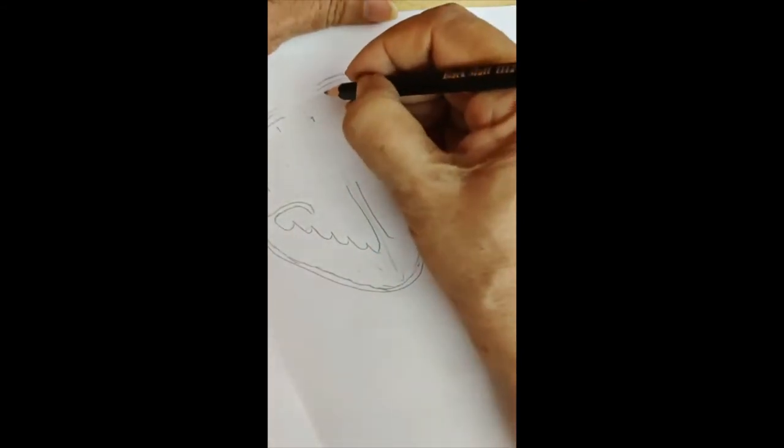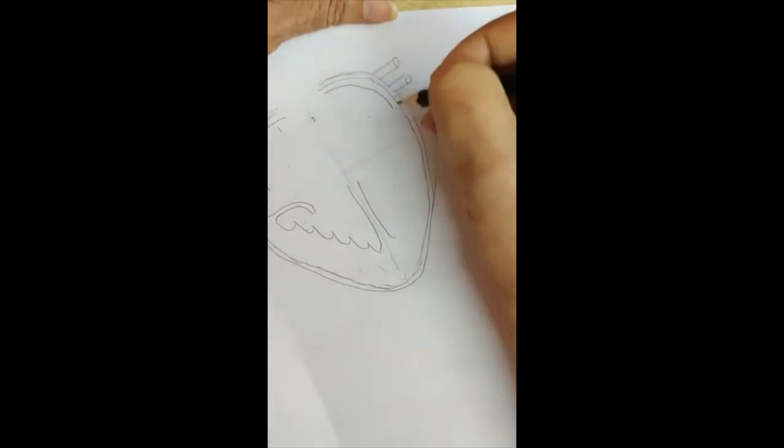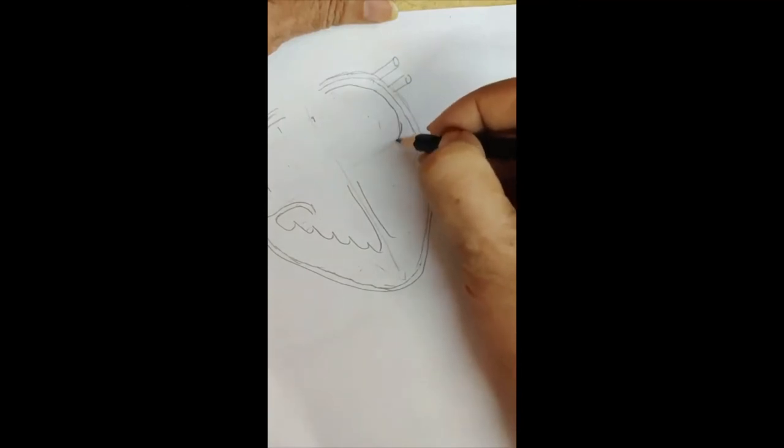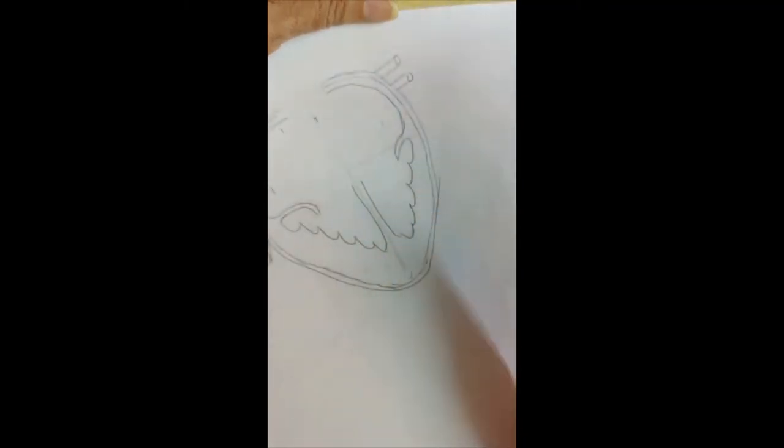Similarly on the right side also we are showing the thin wall of atrium, then the valve, and then of course the thick ventricle. So you have made the atria, ventricle, and the septum. Now you need to show the arteries.